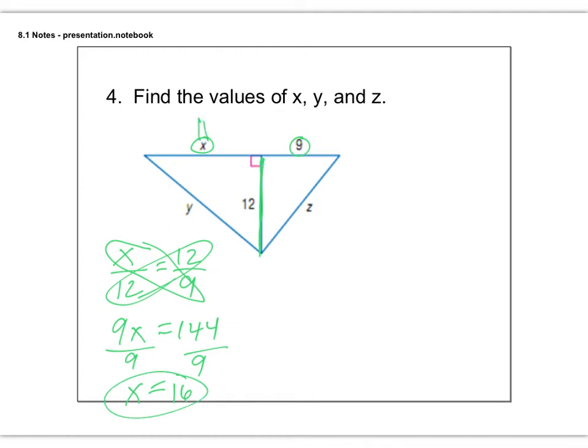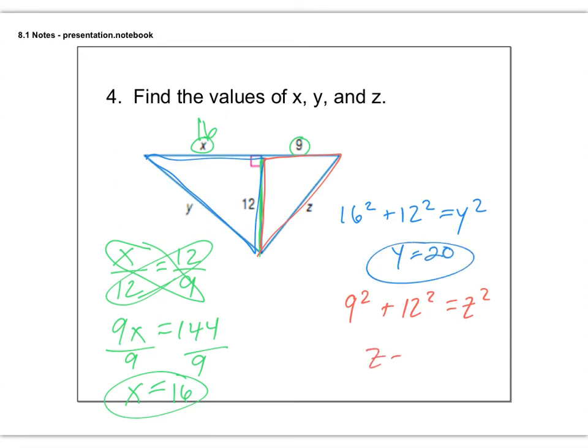Now we know this is 16, and then again we jump in and we do Pythagorean theorem twice. We can use this left triangle over here and we can go 16 squared plus 12 squared equals y squared and solve for y. And then we can also do the right triangle which is over here. So we're going to do 9 squared plus 12 squared equals z squared and solve for z. Why don't you take a second and find those two answers? Y should be 20 and z should be 15.